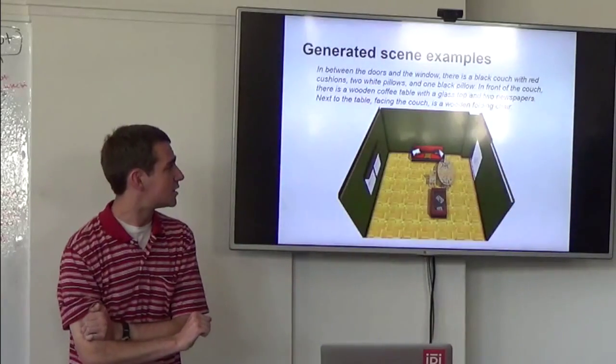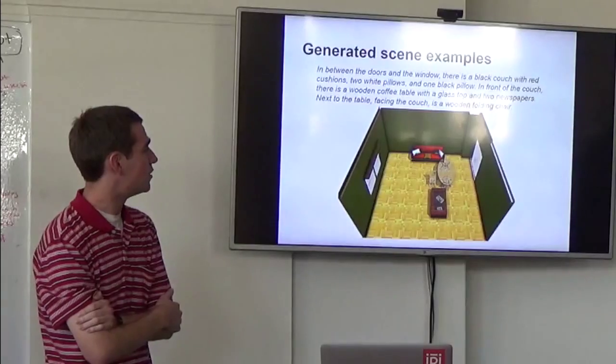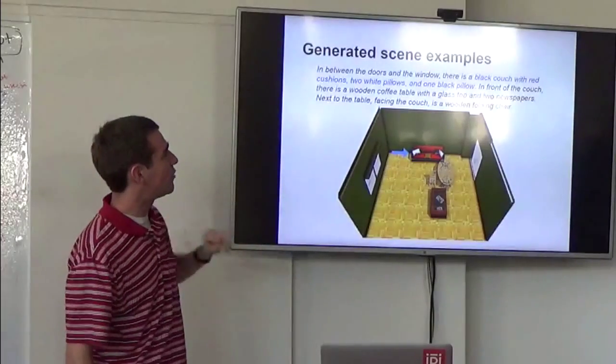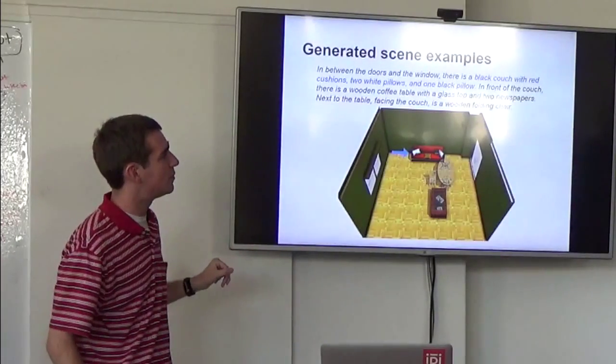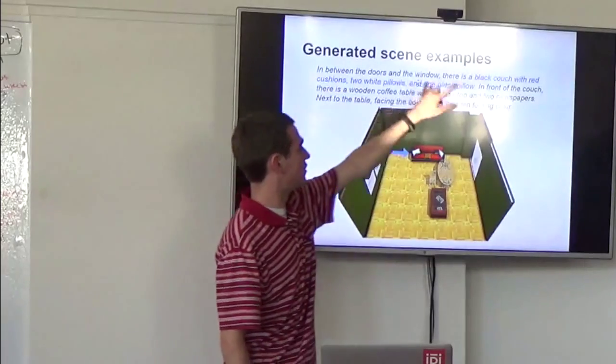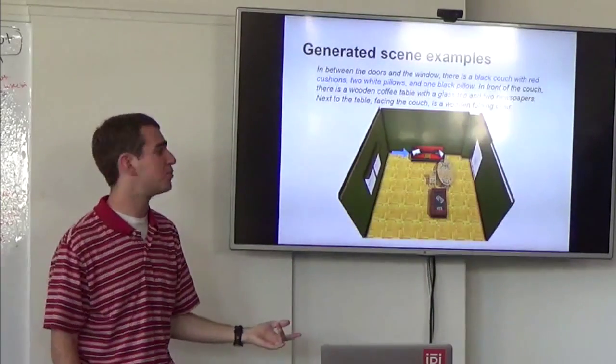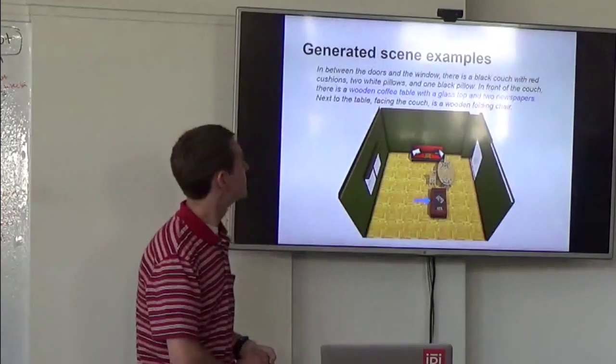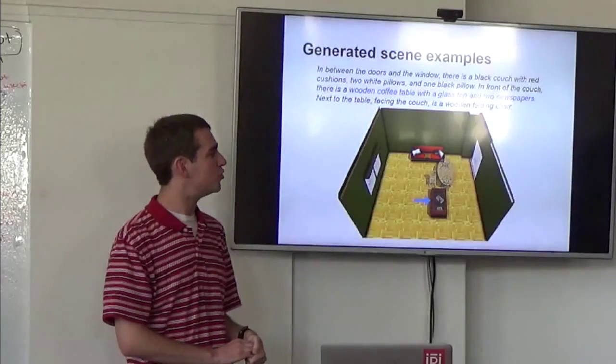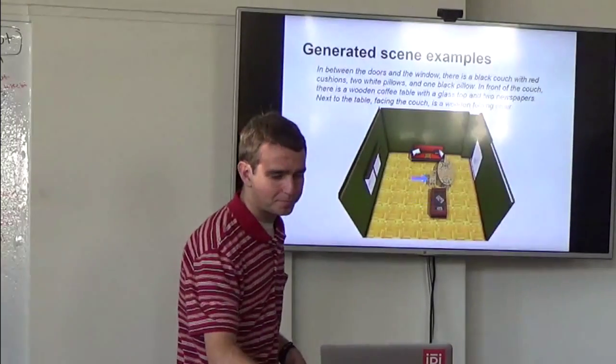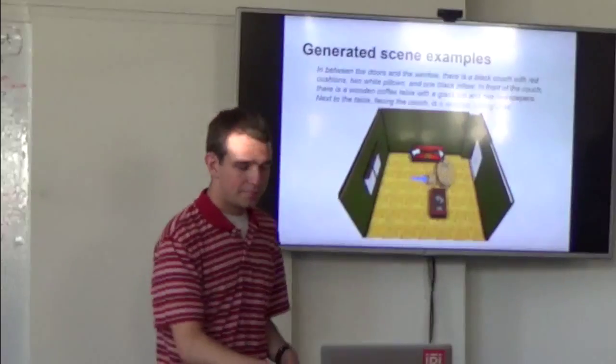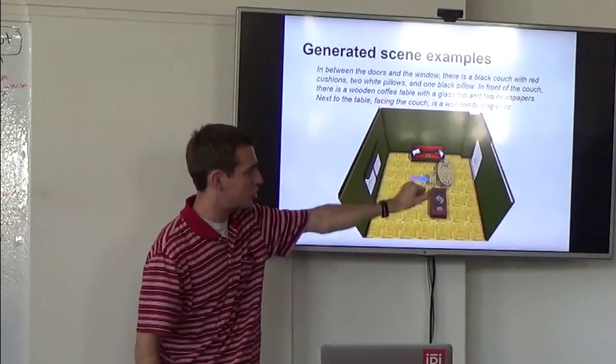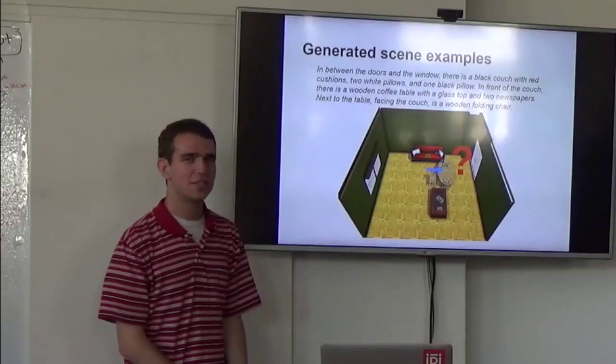So let me show you some particular example of how this system improves. So here we have a black couch with red cushions, two white pillows, and one black pillow. So each of these mentions of the pillows is actually contributing as a descriptor that allows us to pick this model, which is exactly the one that we want. Similarly, we've got a wooden coffee table with a glass top and two newspapers. And we've got a wooden folding chair. Now there are a couple of things that are also wrong with this. So the wooden folding chair, if you notice, is not facing the couch as we want it to. And yeah, where did this thing come from?